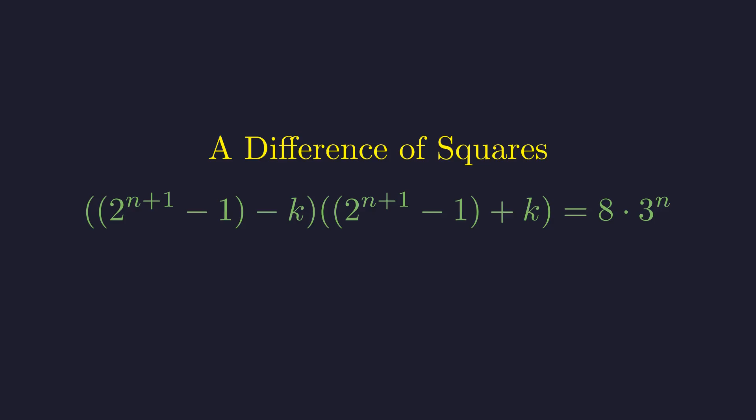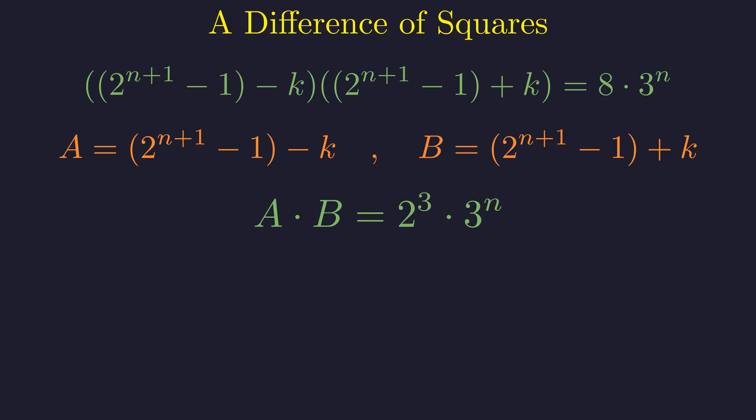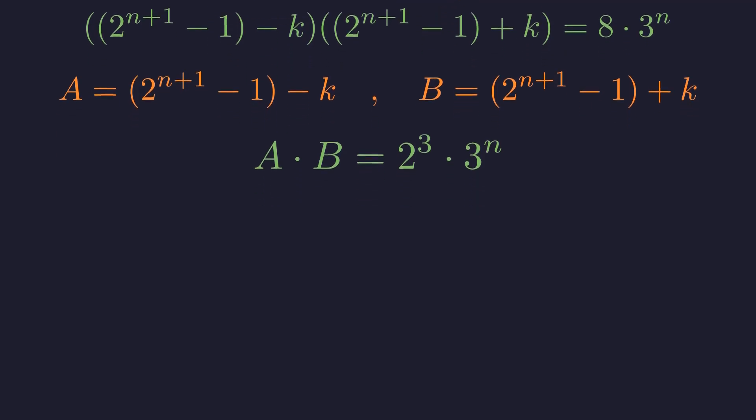For simplicity, let's define these two factors as a and b. We define a as the smaller factor and b as the larger factor. Consequently, the product a times b is equal to 2 cubed times 3 to the power of n. We can deduce properties of a and b by examining their sum and difference. The difference b minus a is equal to 2k, which is an even number. This implies that a and b must have the same parity. Their product is even so they cannot both be odd. Since they share the same parity, it follows that both a and b must be even.